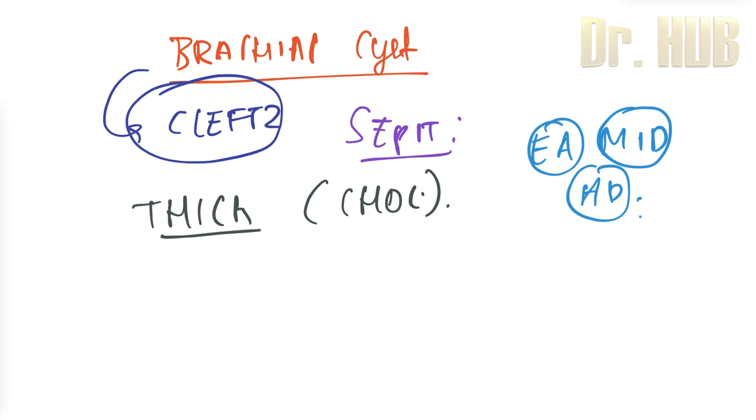It is located in the upper and middle one-third of the junction of the sternocleidomastoid. So upper one-third and middle one-third, this junction is where it is seen.